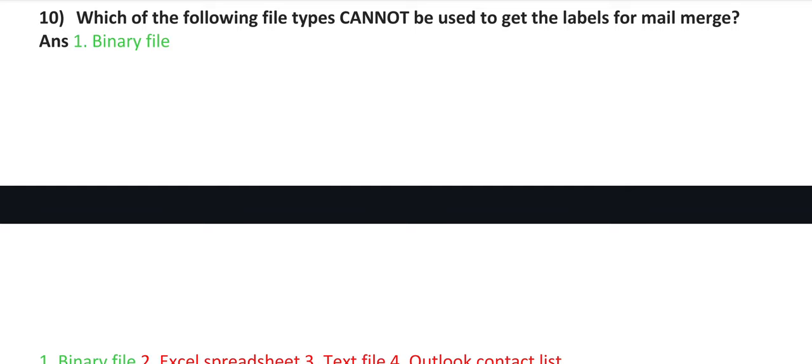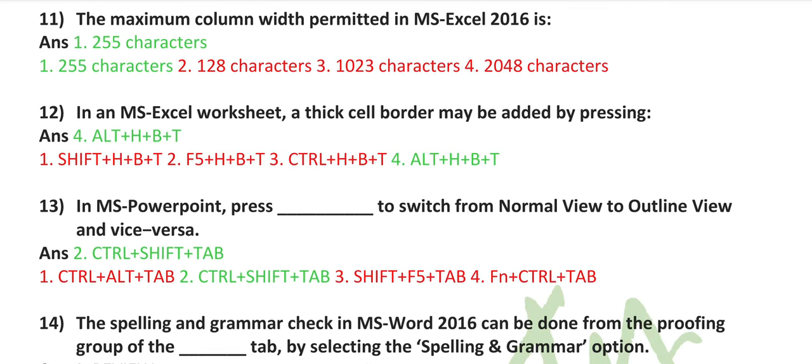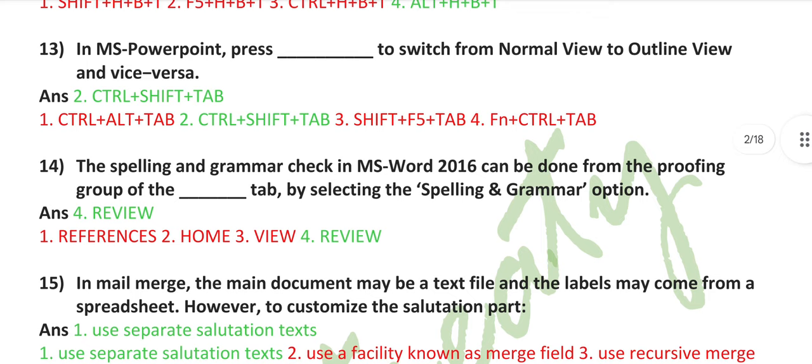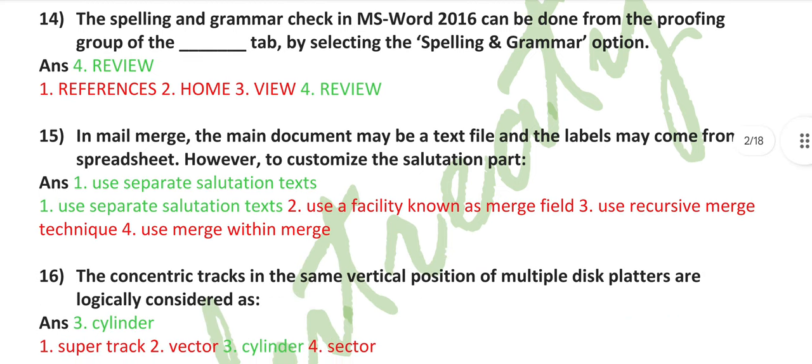Which of the following file types cannot be used to get the labels for mail merge? Binary file. The maximum column width permitted in MS Excel 2016 is 255 characters. In an MS Excel worksheet, a thick cell border may be added by pressing Alt plus H plus B plus T. In MS PowerPoint, press Control plus Shift plus Tab to switch from normal view to outline view and vice versa.